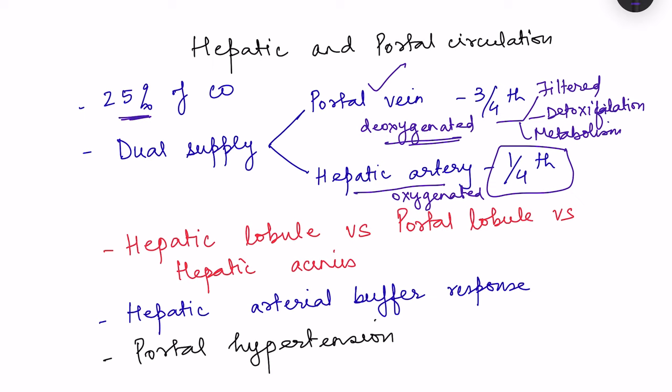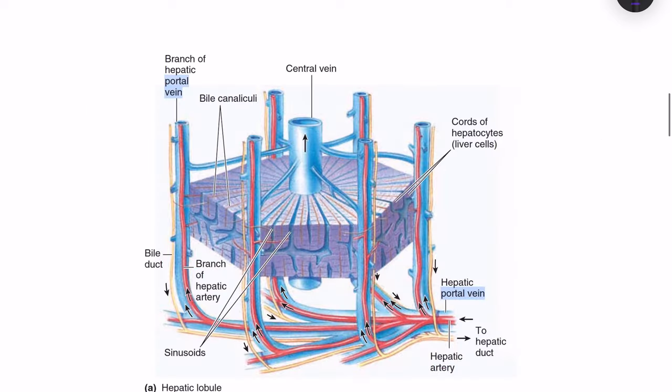Even though portal vein blood is deoxygenated, it still contributes some oxygen supply to the liver. We will now cover important concepts in liver blood supply: the hepatic lobule versus portal lobule and hepatic acinus, portal hypertension, and regulation of blood flow in the liver.